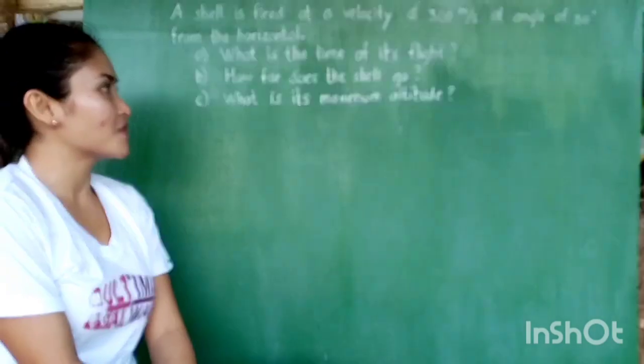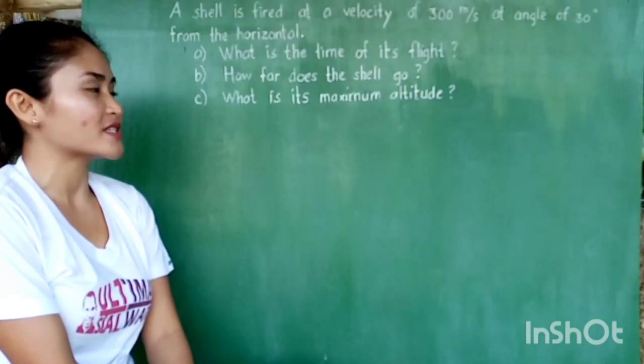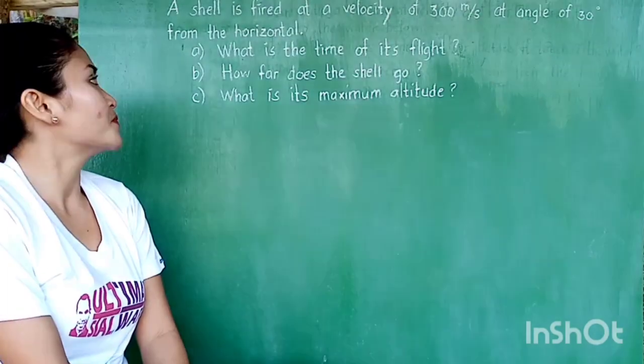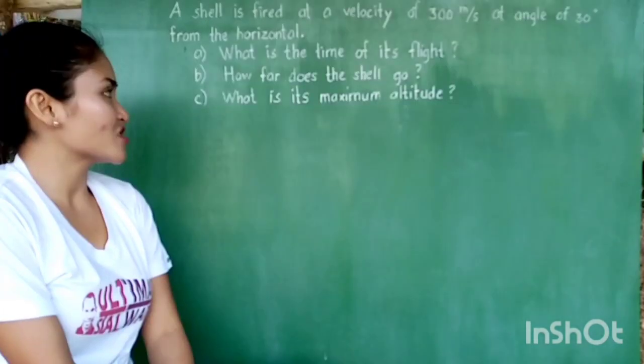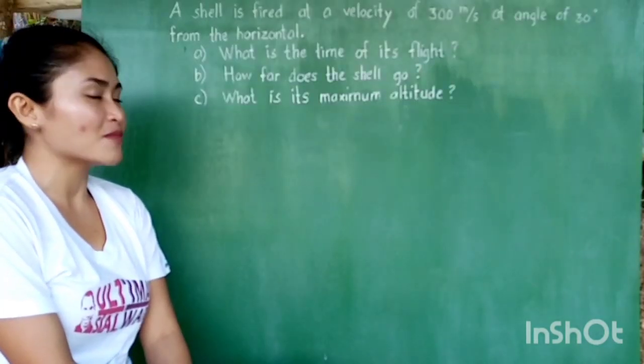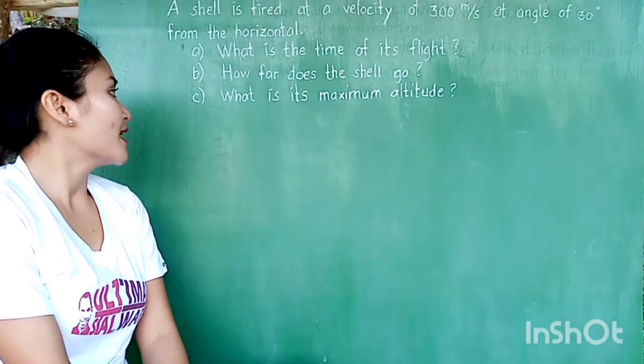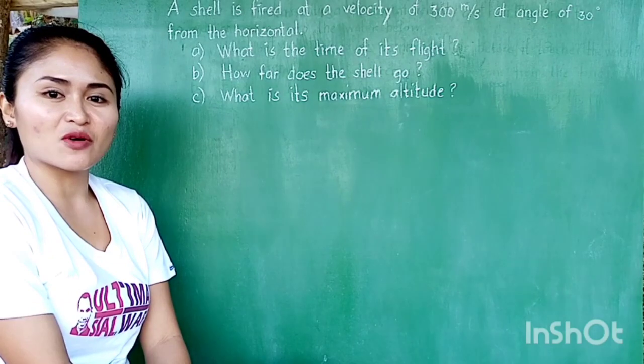A shell is fired at a velocity of 300 meters per second at an angle of 30 degrees from the horizontal. The following questions are: what is the time of its flight, how far does the shell go, and what is its maximum altitude?